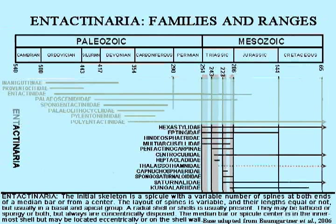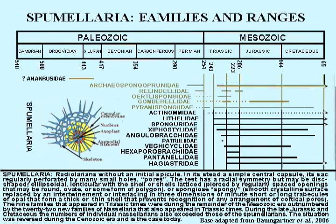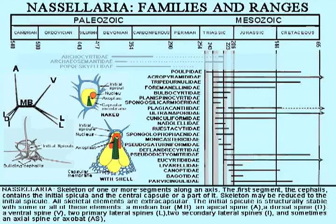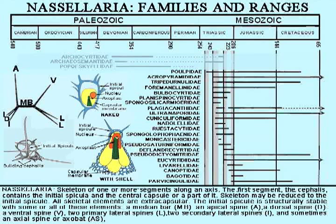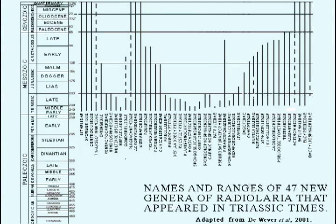The range charts of the orders of Triassic radiolaria list the new genera piecemeal, but this combined plot of all three makes clear what explosion means. In summary, among the 56 families of radiolaria recorded in Triassic strata, 47 are new — 25 of them appeared in early and middle Triassic times, and the rest during the later stages of the period.